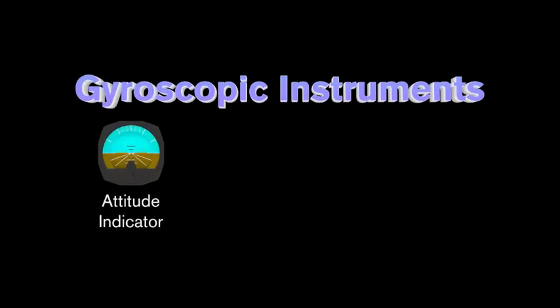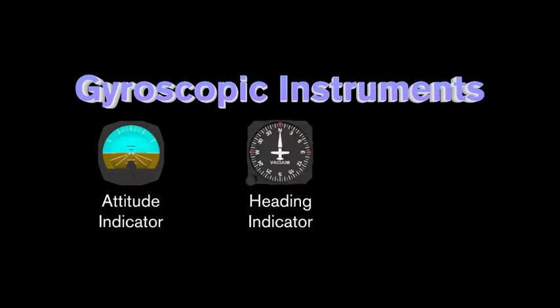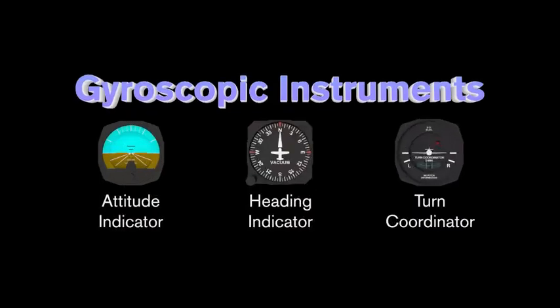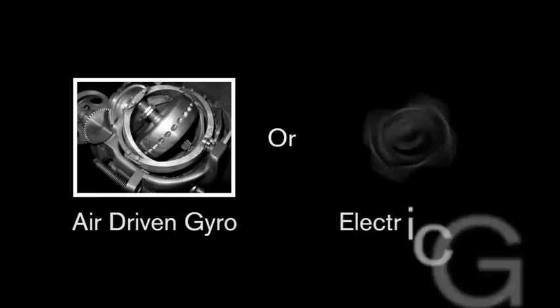Gyroscopic instruments include the attitude indicator, the heading indicator, and the turn coordinator. These are considered gyroscopic instruments because each one relies upon a gyroscope to function. They can either be driven by air suction or electricity.